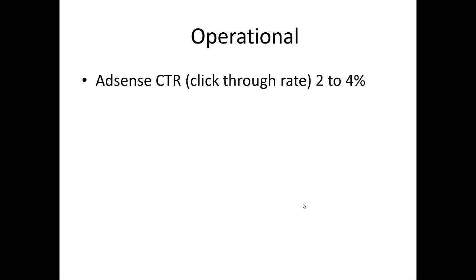The AdSense click-through rate — the percentage of people who come to read your article and then click on an ad — varies from about 2% to as much as 4% per article. This has everything to do with what kind of article is written, what the topic is, and who the people are reading that article. It's also very dependent on the kinds of ads running at that time. During certain seasons, there may be very competitive, creative ads that Google places alongside your article, while at other times the ads may be less compelling and get fewer clicks.